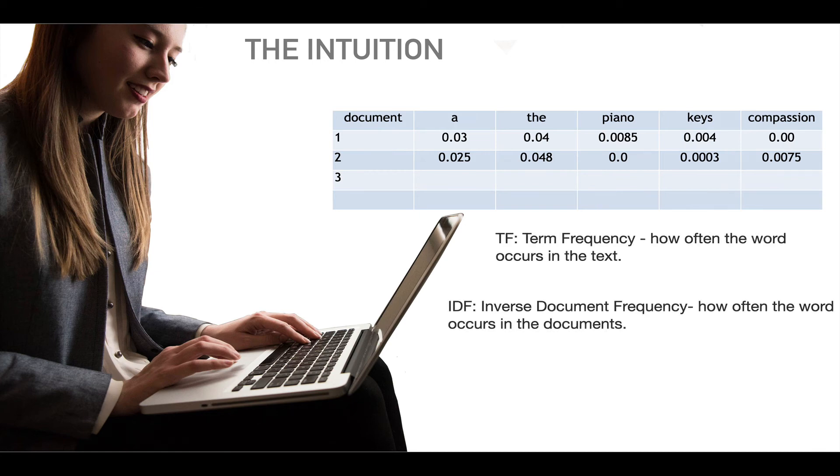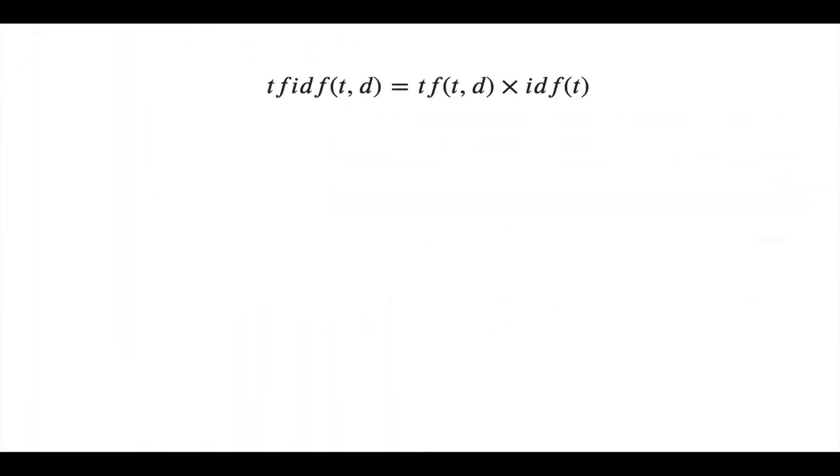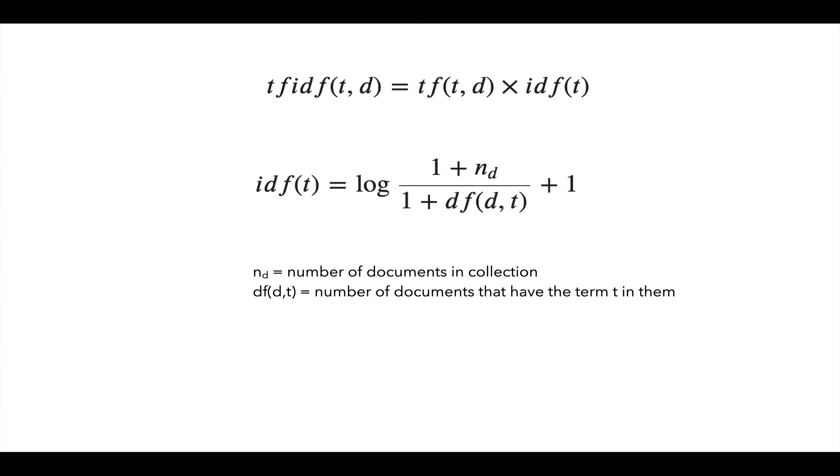So term frequency is how often the word occurs in the text. And IDF, inverse document frequency, is how often the word occurs in the documents or how many documents contain that word. Here's the formula. We just simply multiply the term frequency by the IDF. And TF can be either the raw count of how many times the word occurred in the document or the frequency. So 4% of the words in this document are 'the'. That's term frequency. And IDF is this formula. It always looks complex when people look at formulas, they tend to ignore them. But actually this formula is pretty easy.